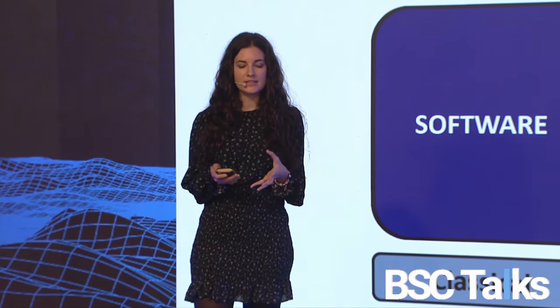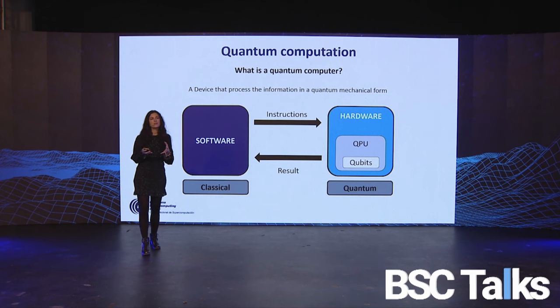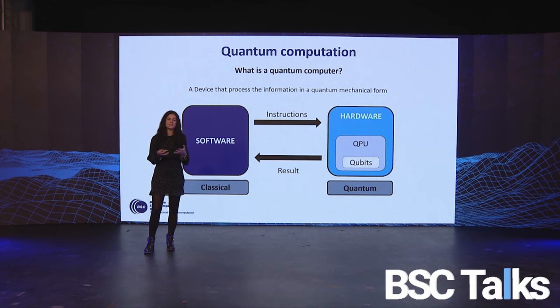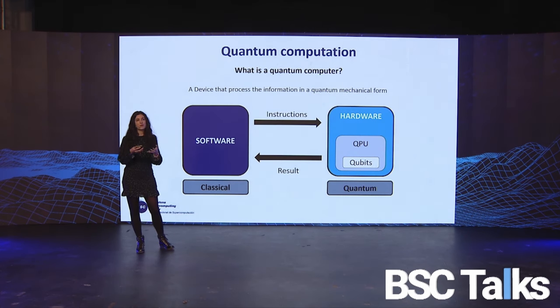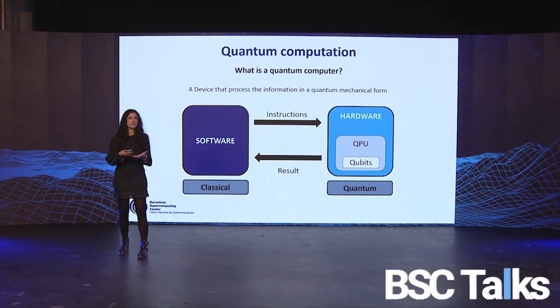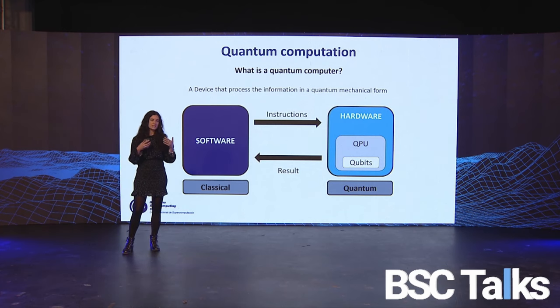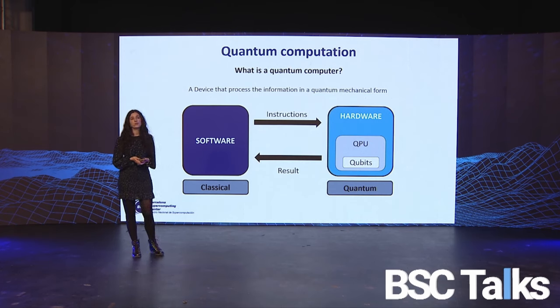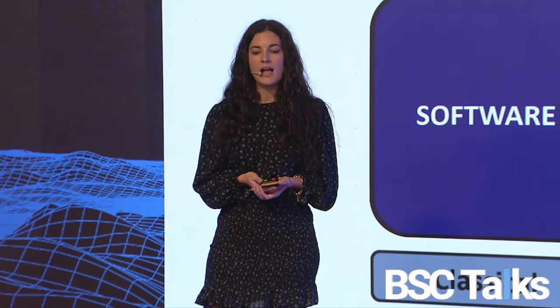In a big picture, a quantum computer is composed of two parts. The software part is the set of instructions — the physical operations sent to the hardware. This software is classical, meaning traditional computing. This set of instructions is sent to the quantum computer, which contains the quantum processing unit with the qubits — the basic information units of quantum information. This hardware is purely quantum, and the result of the computation is returned to the software part to post-process or to obtain the solution, or to start the loop again.